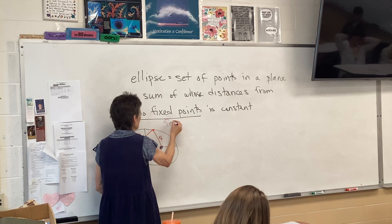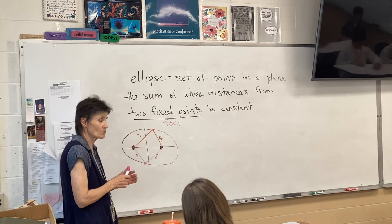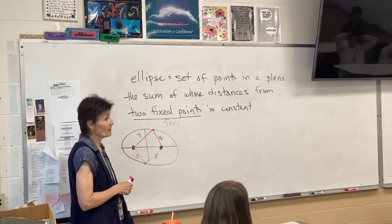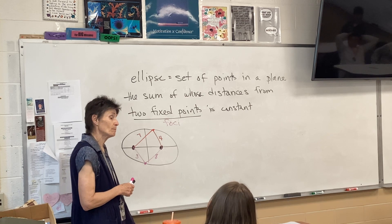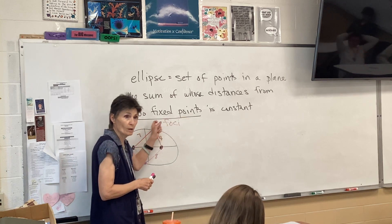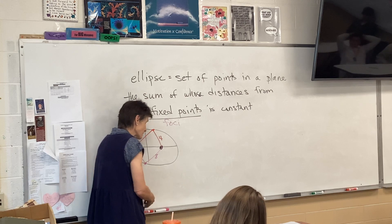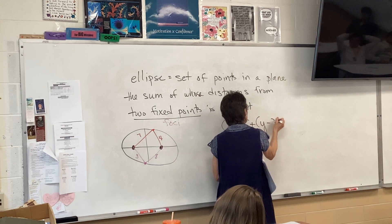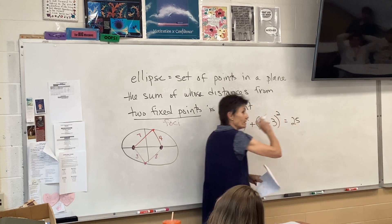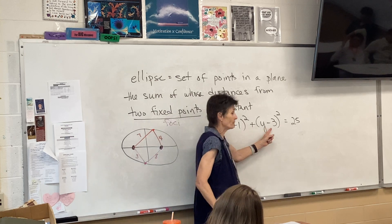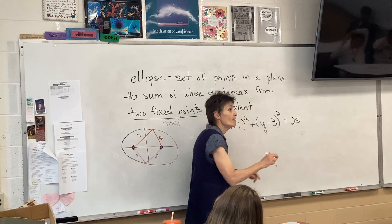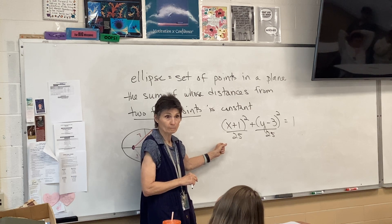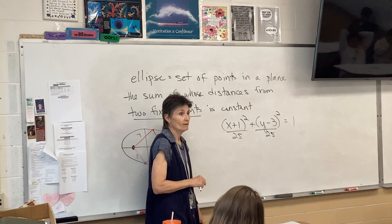Those two fixed points are called the foci. Those of you that were here yesterday or watched the video know that the definition of a parabola is what? Set of points in a plane equidistant from a given point and a given line. And what is that given point called? The focus. These are two focus points, foci. So what is the equation of an ellipse look like? I want you to stop for a second and think about what the equation of a circle looks like. This is the equation of a circle, right? Tell me about this circle. Its center is at negative one, three. And its radius is five. That equation could actually be written like this. Same equation. This is the equation of a circle centered at negative one, three, with a radius of five.